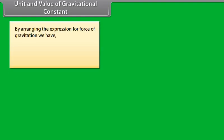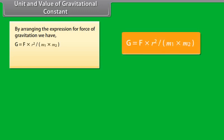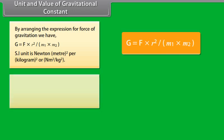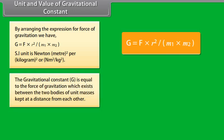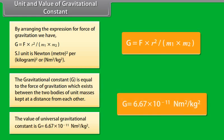Unit and value of gravitational constant: by rearranging the expression for force of gravitation, G = F·R² / (M₁·M₂). Its SI unit is Newton meter squared per kilogram squared (N·m²/kg²). The gravitational constant G equals the force of gravitation which exists between two bodies of unit masses kept at a unit distance from each other. The value of the universal gravitational constant is G = 6.67 × 10⁻¹¹ N·m²/kg².